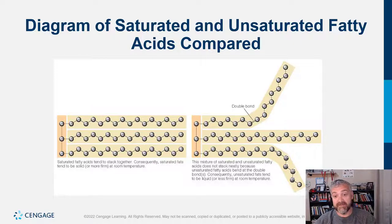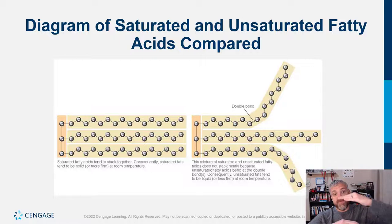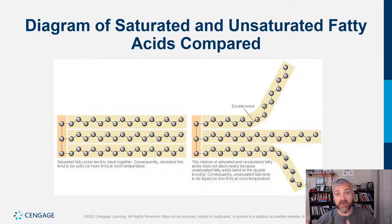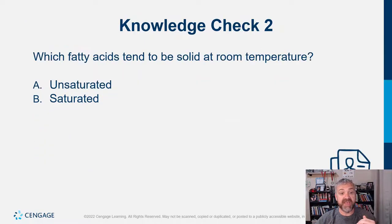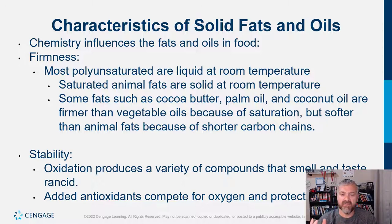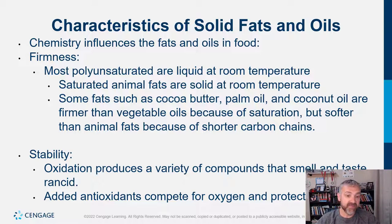Polyunsaturated fats are liquid at room temperature, monounsaturated fats like olive oil are liquid at room temperature but solidify in the refrigerator, and saturated animal fats are solid at room temperature. Coconut oil is firmer than vegetable oils due to saturation but softer than animal fats because of shorter carbon chains — about half the fat in coconut oil is medium chain triglycerides. Short chain fats are found in butter, medium chain fats in coconut oil, and long chain fats are mainly your animal fats.